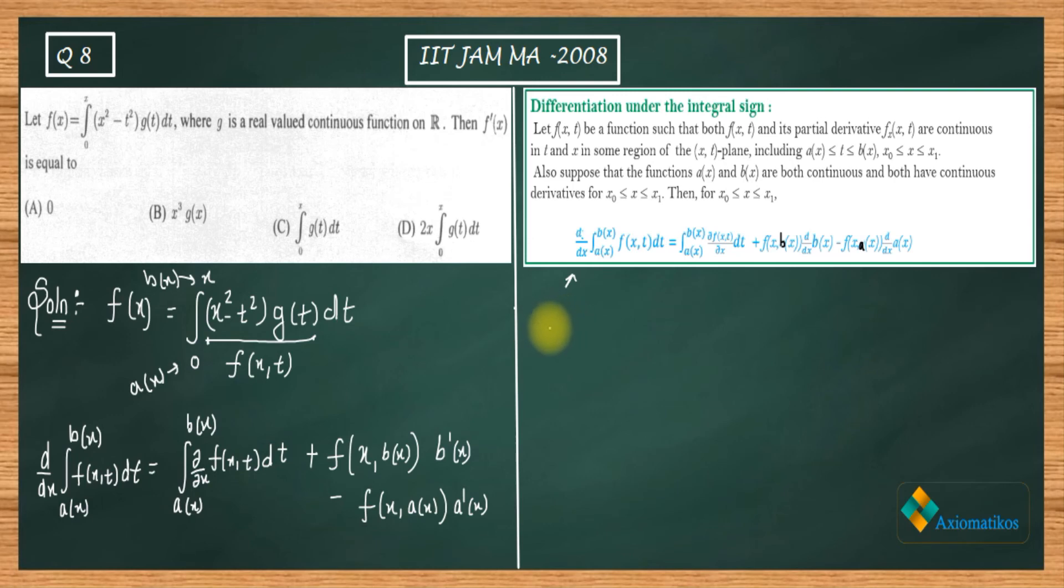Now let us apply. It's a very simple question if you remember this rule. So f'(x) will be the partial differentiation of your given function f(x,t). This is your f(x,t). If you partially differentiate it with respect to x, you will get 2xg(t)dt. This partial differentiation thing is your job; I hope you know already partial differentiation. Now see, f(x, b(x)), what is your b(x)? Your b(x) is actually x.